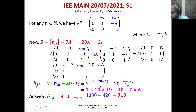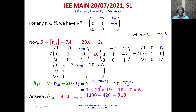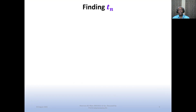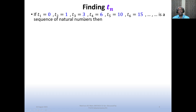Therefore the answer is b₁₃ = 910. The discussion of the main problem is now over. Next, we show how to derive the formula for tₙ systematically.